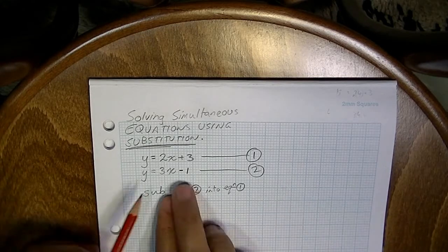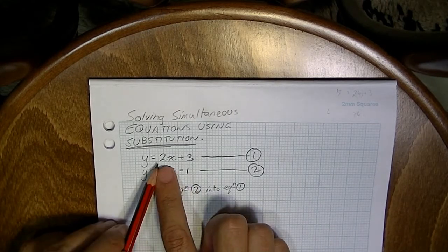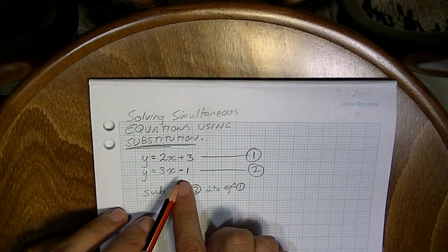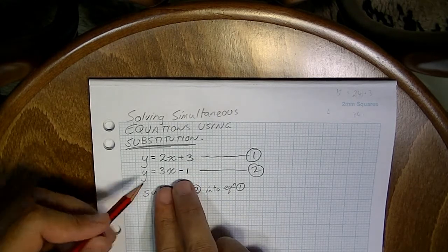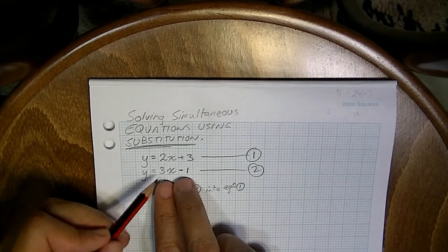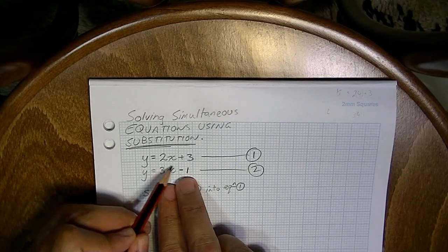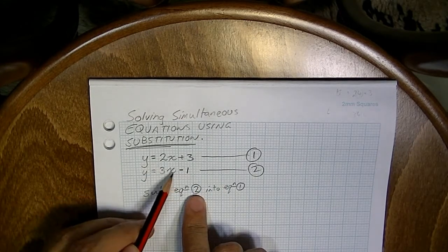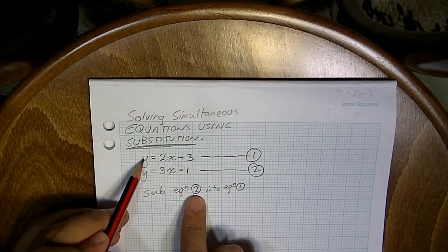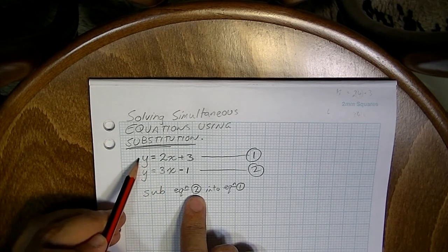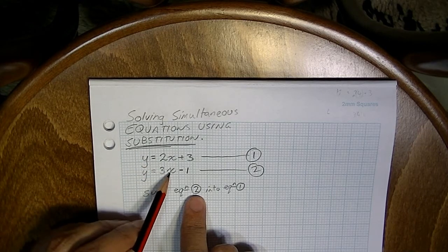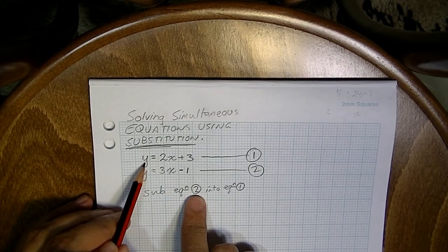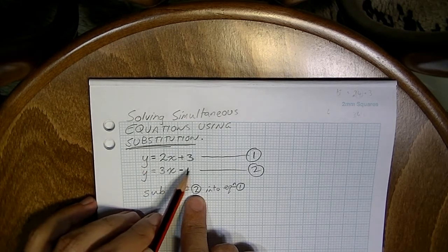Now, what does that mean? We can see that y equals 2x plus 3, and we can see here that y equals 3x minus 1. Now, if we want to solve these simultaneously, we can take the 3x minus 1 from equation 2, and sub it into equation 1, where y is, because we know that in this second equation, y equals 3x minus 1. So if we let y in the first equation equal 3x minus 1, we should be able to solve this.